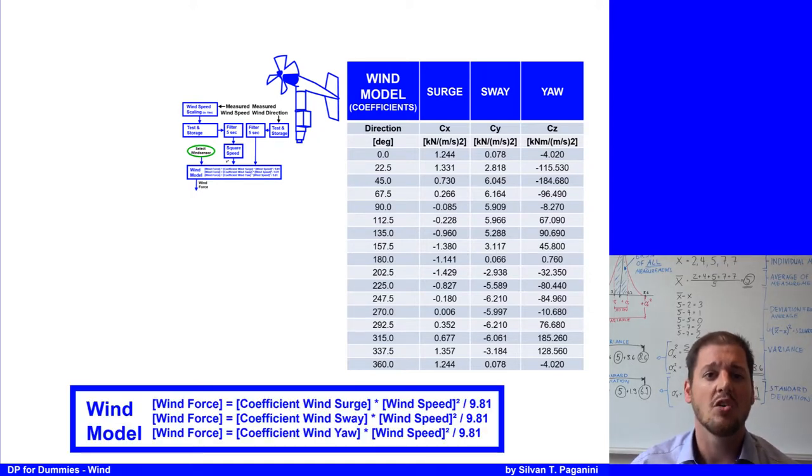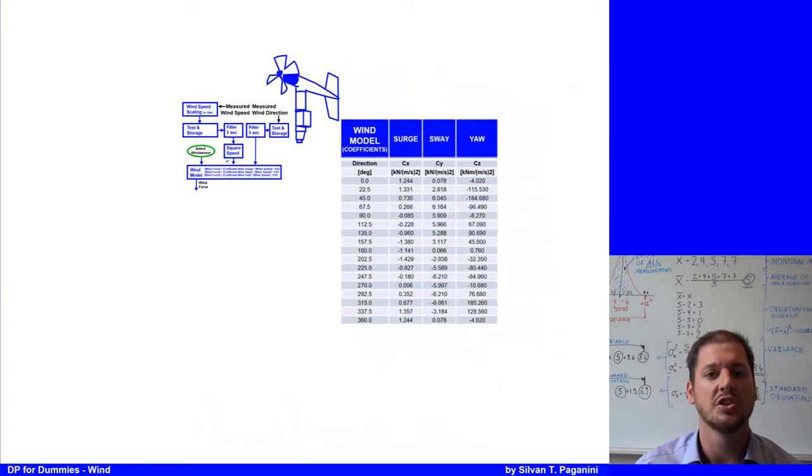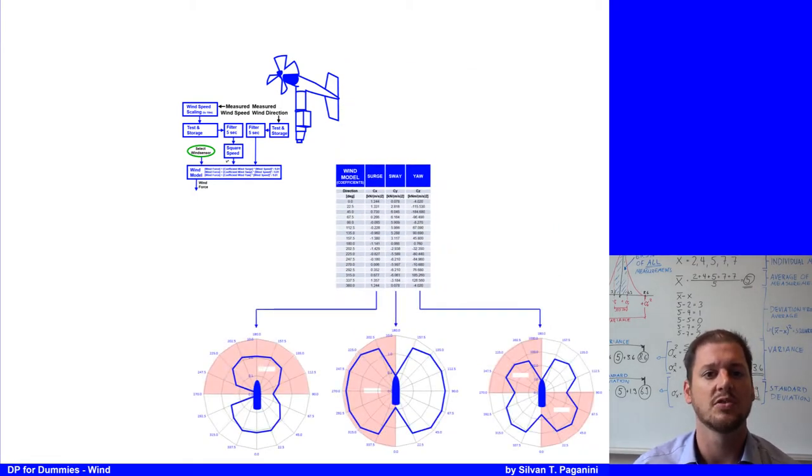When we know where the wind is coming from, we can pick out the coefficient for that direction and calculate the force for the three axes as the coefficient multiplied by the square of the wind speed divided by 9.81. Because the wind table is in kilonewtons, to get it to tons, we have to divide it by 9.81.